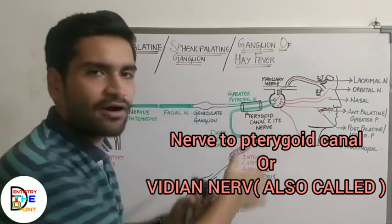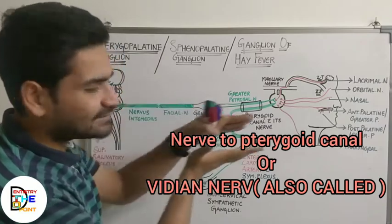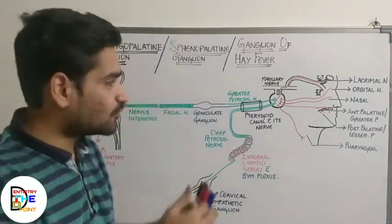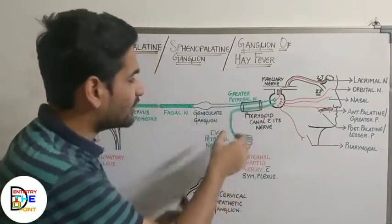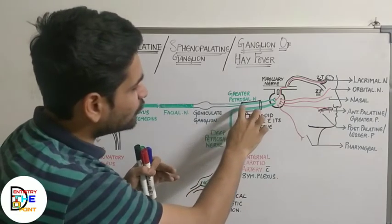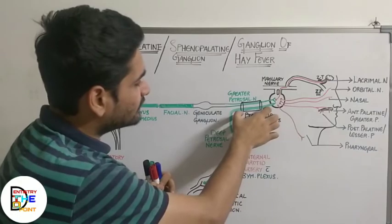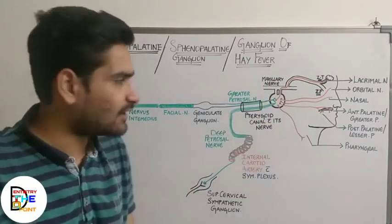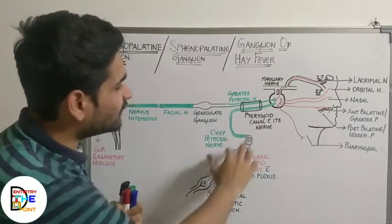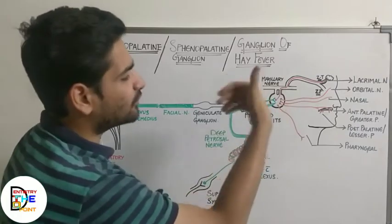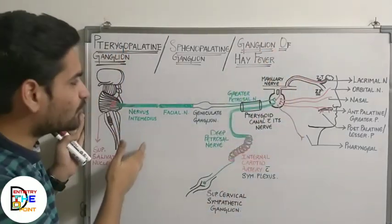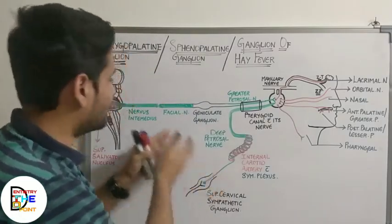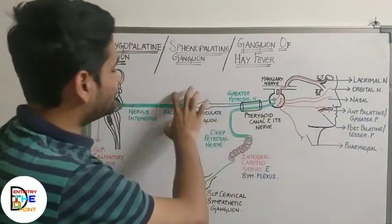The greater petrosal nerve and the deep petrosal nerve join together to form the nerve of the pterygoid canal, which travels through the pterygoid canal toward the pterygopalatine ganglion. The sympathetic postganglionic fibers do not relay in the ganglion — they continue forward directly. But the parasympathetic preganglionic fibers relay in the pterygopalatine ganglion and then continue as postganglionic fibers.